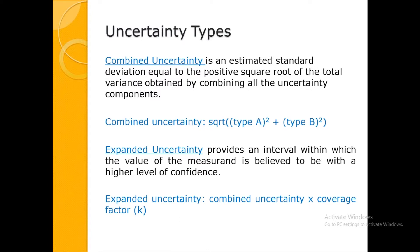Combined uncertainty, as the name suggests, combines all uncertainties — Type A and Type B. The formula is the square root of (Type A squared plus Type B squared). Type B may have multiple contributing factors — volume, balance, CRM — all must be squared and added to Type A squared, then the square root taken. Expanded uncertainty provides an interval within which the value of the measurement is believed to lie with a high level of confidence. Expanded uncertainty equals combined uncertainty multiplied by the coverage factor.